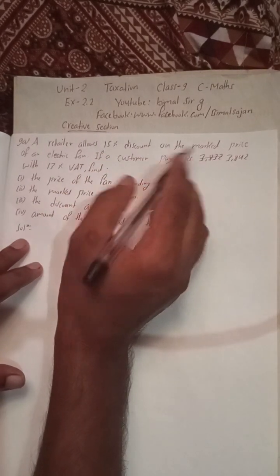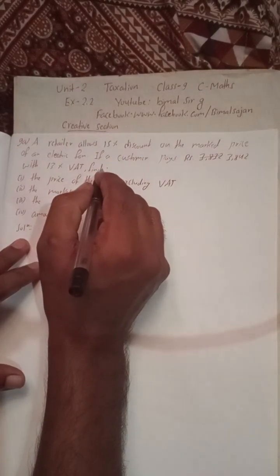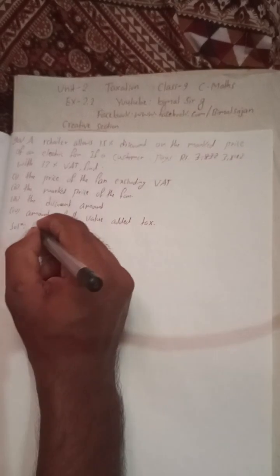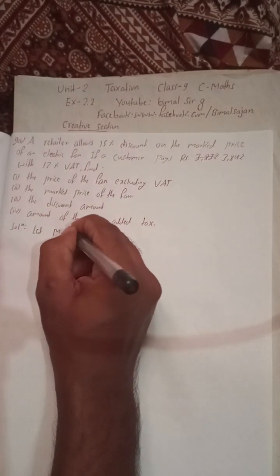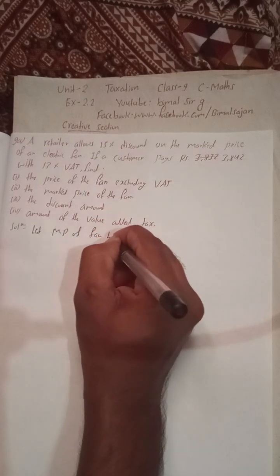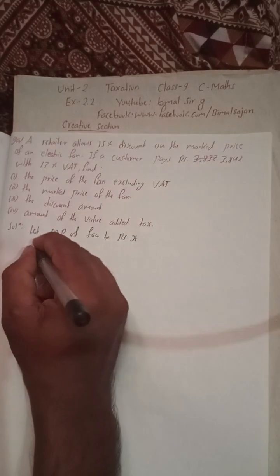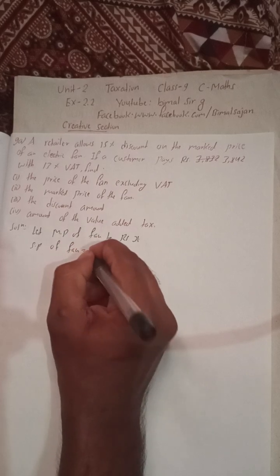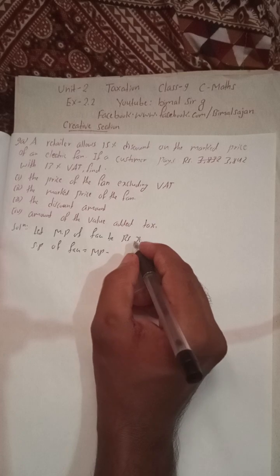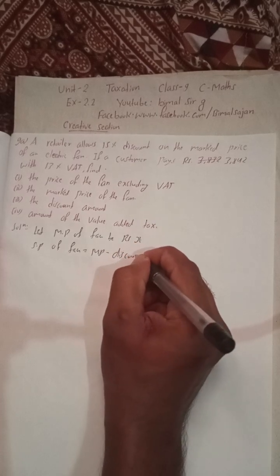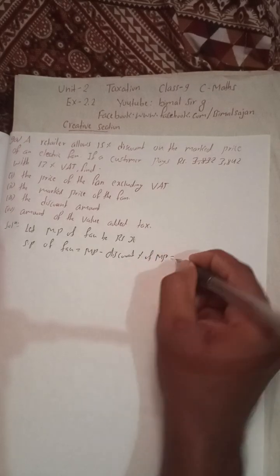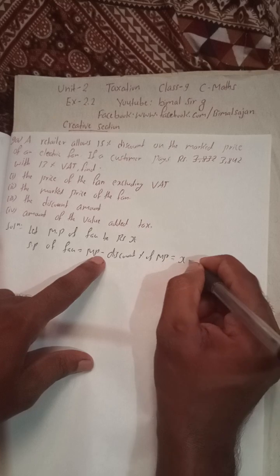The marked price is not given directly. So let the marked price of the fan be Rs X. Then the selling price of the fan will be: mark price minus the discount. Since there is a 15% discount, we subtract the discount percent of the marked price.